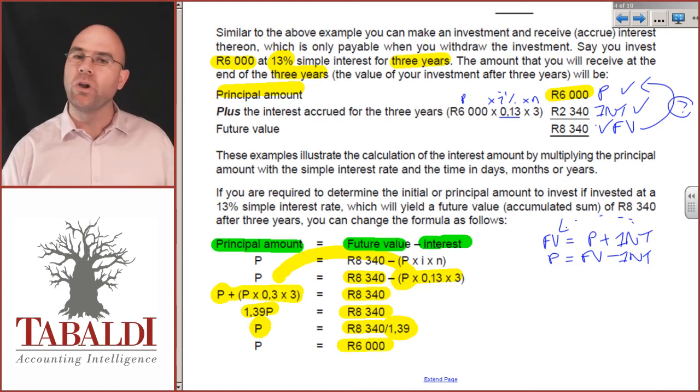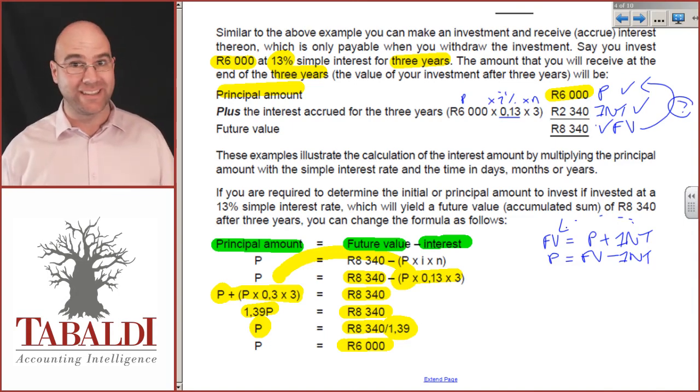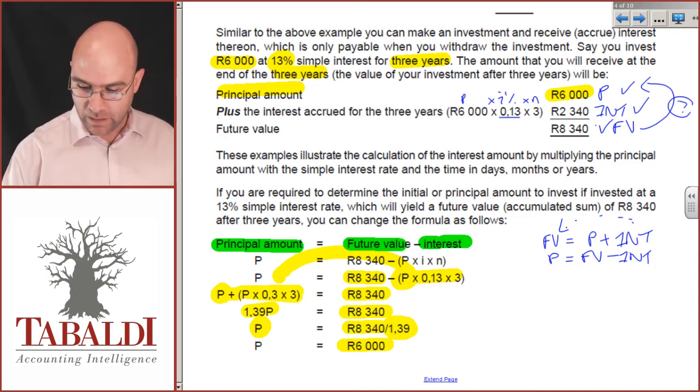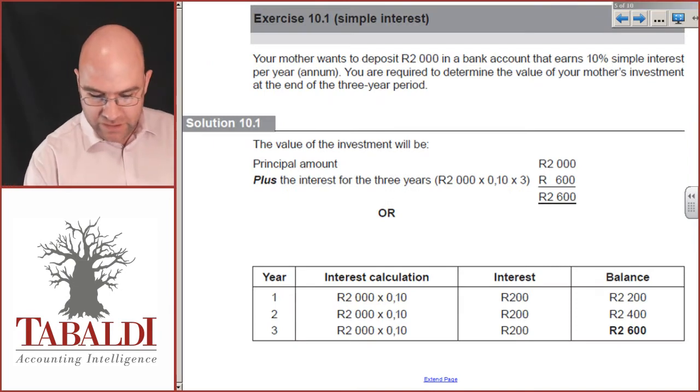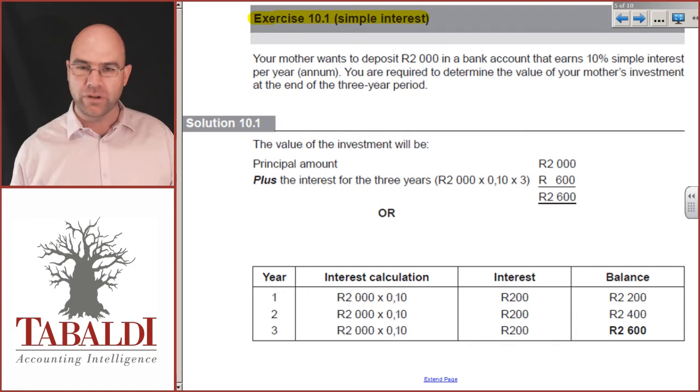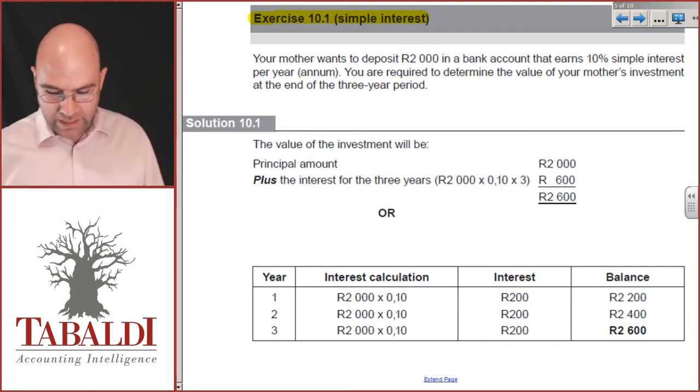You must be able to work the basic back and forward and you must be able to do your basic algebra. I can't teach that to you again. That's from high school. Let's do another example. Now, example 10.1 out of the UNISA study guide. So, page forward a few pages and let's go.